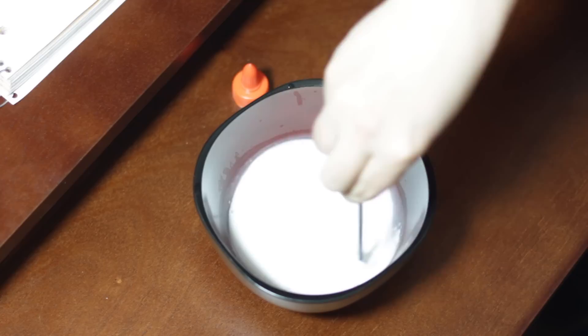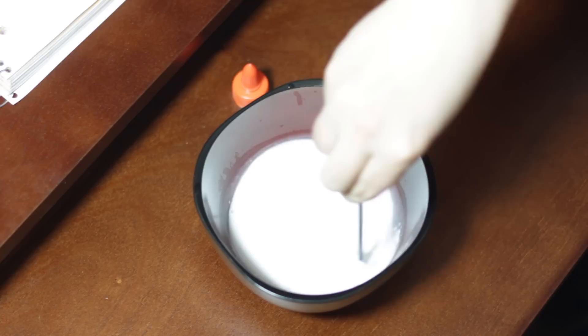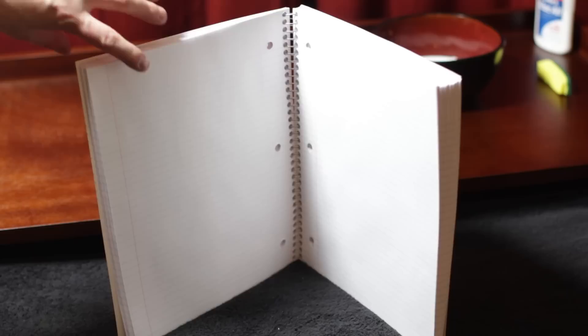We need the glue to soak into the paper, so put a little water into a bowl and match the same amount with glue. Stir it around really good until you have a nice, thin consistency. This means you're ready.